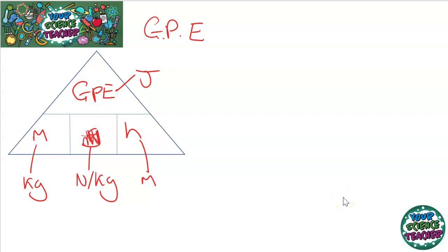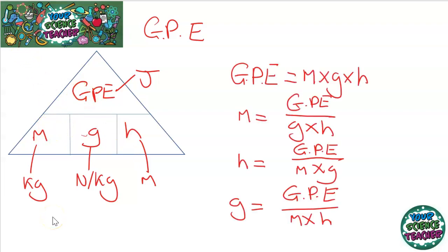Or you could work out H, the height gained, by doing GPE divided by mass times gravity. Now, what's important to remember with gravitational potential energy is that only the vertical height that something moves. So, if you're working out the amount of gravitational potential energy, only look at the vertical height gained. Don't look at the total distance something's moved. Sometimes they try and trick you with this. But it's just the vertical height something has gained.